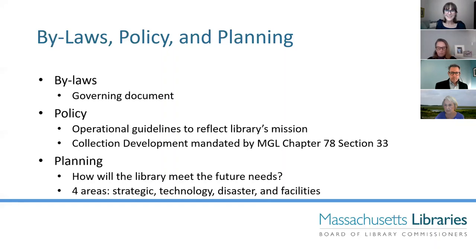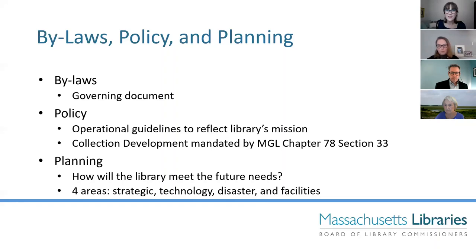Planning is an activity you may be engaged in as a trustee. It's an opportunity to focus on where the community wants the library to be in three to five years — what will the library look like in the future and how are you going to get there? There are four areas: strategic, technology, disaster, and facilities. Strategic planning is one of the bigger undertakings that happens every three to five years, where the library reviews trends, assesses future needs, and engages with the community and stakeholders to develop a plan with goals and objectives. This document helps the library advocate for local funding and apply for grants.